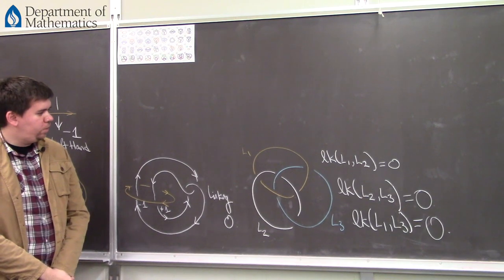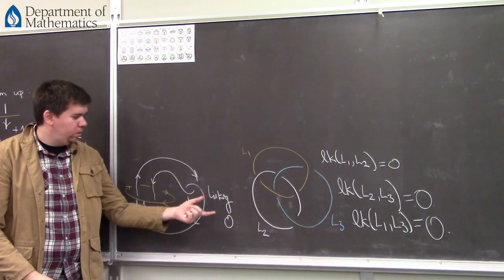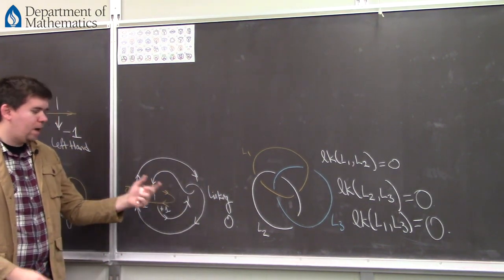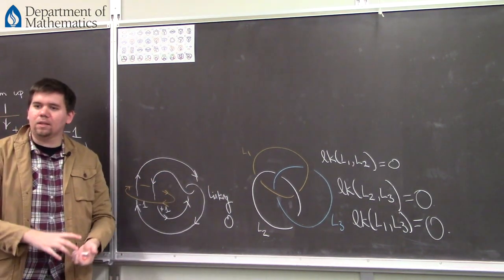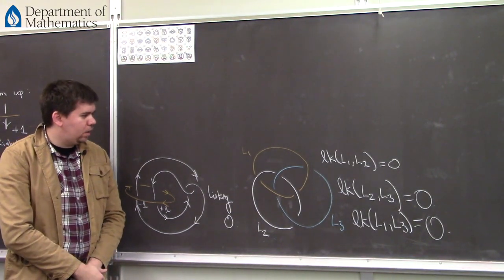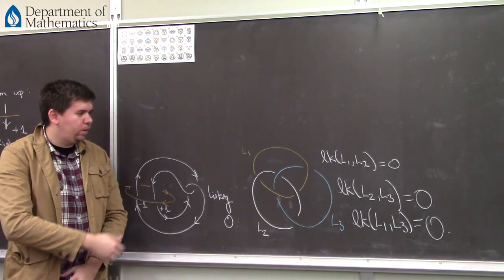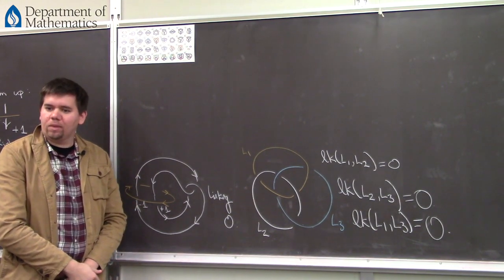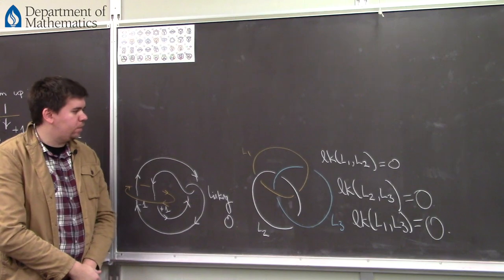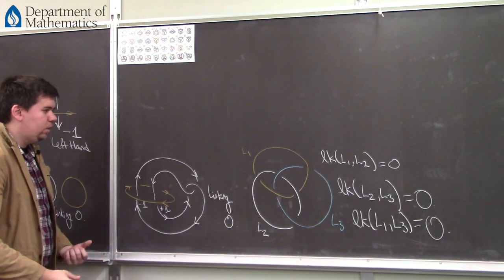Just because you can have linking between components of zero, you can still have some higher order linking. I'm hoping that maybe by the end of this lecture or next lecture, we can hint at how to measure that higher order linking.